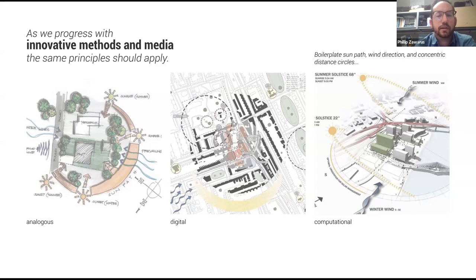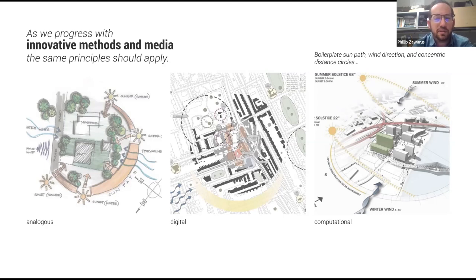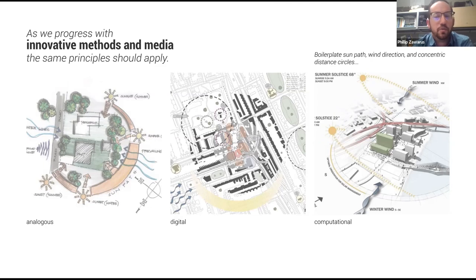That really becomes counterintuitive to using innovative new methods. When we introduce new technology and robust software, our perspective and understanding should also advance the same way. It's contrary to this idea — when we look at these three drawings we still see the same sun angles, wind patterns, and concentric circles showing distance. Whether done by hand or in 3D space, it's really the same information. There's nothing new being presented, which is unfortunate. So these are the things I'm trying to investigate and push with advanced digital computational modeling.